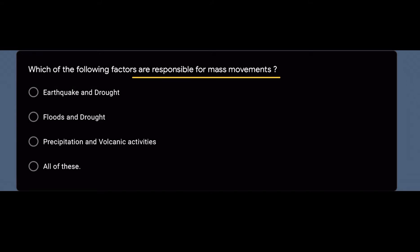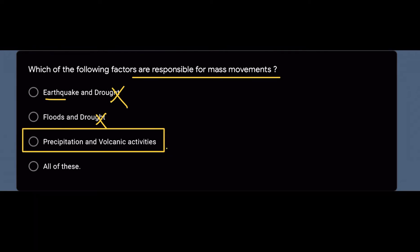The literal meaning of mass movement means movement of rocks, debris, soil, and fragmented materials down a slope. Mass movement triggers include earthquakes, but drought is not a trigger. Floods and heavy precipitation along with volcanic activity are both equally responsible for mass movement. So as per this question, the right answer is option number three.